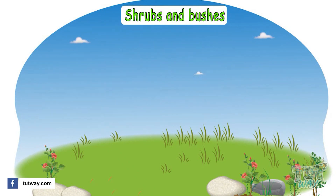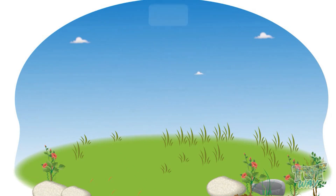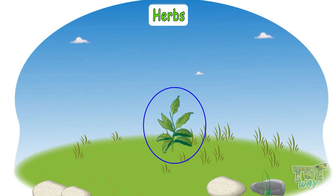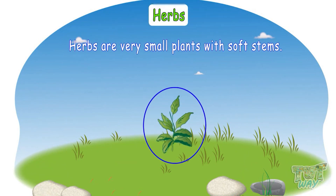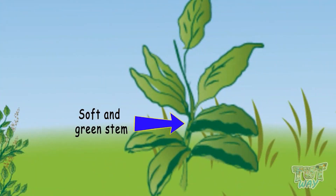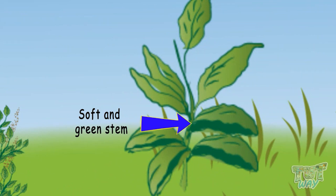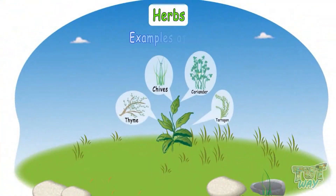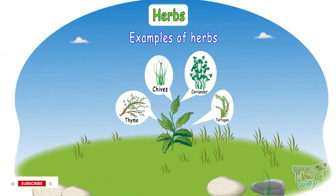Now let's see what are herbs. Herbs are very small plants with soft stems. Their stems are not hard and mostly are green in color. These are some examples of herbs — their stems are weak, green, and also very soft.